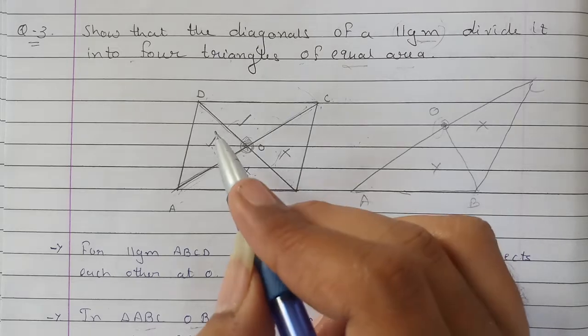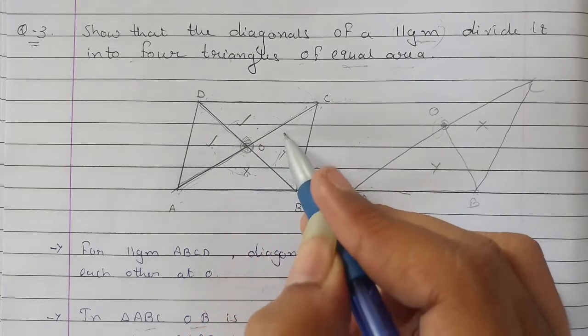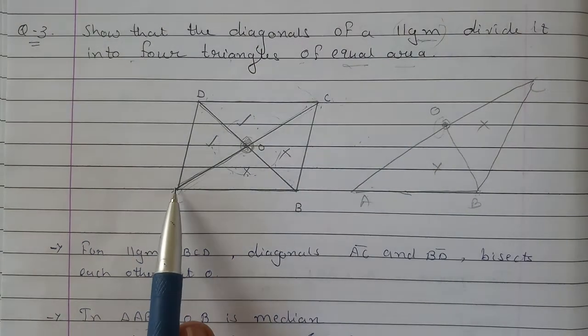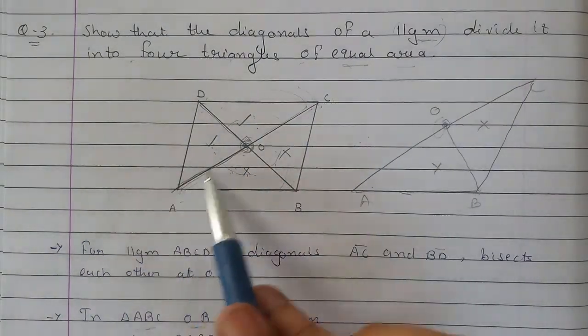and BD. We have to prove that these four triangles have equal area. First, parallelogram ABCD means its diagonals